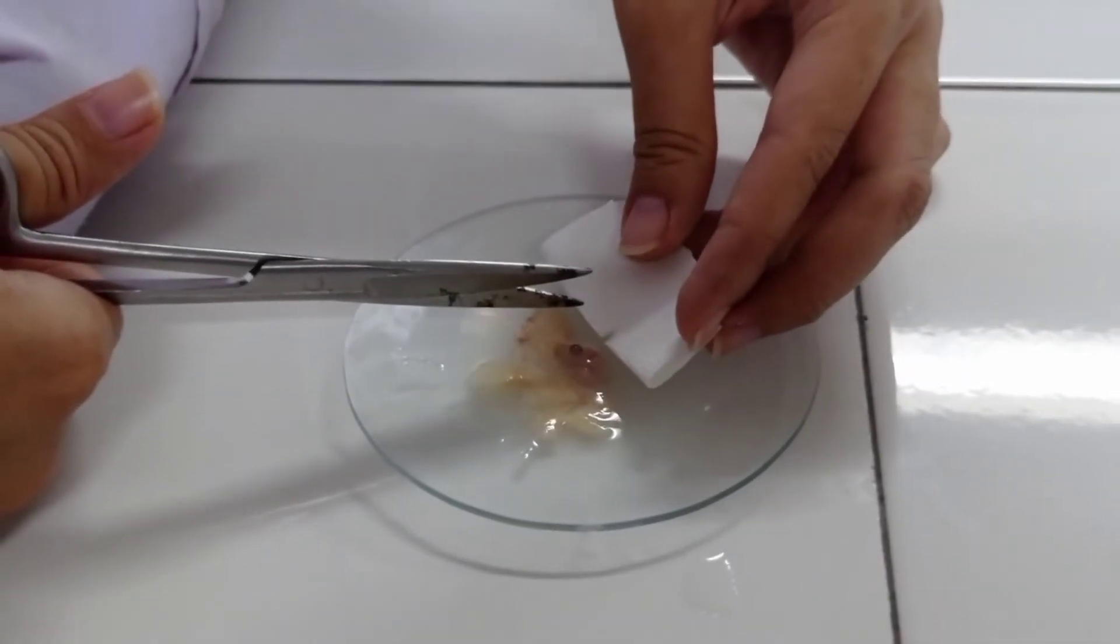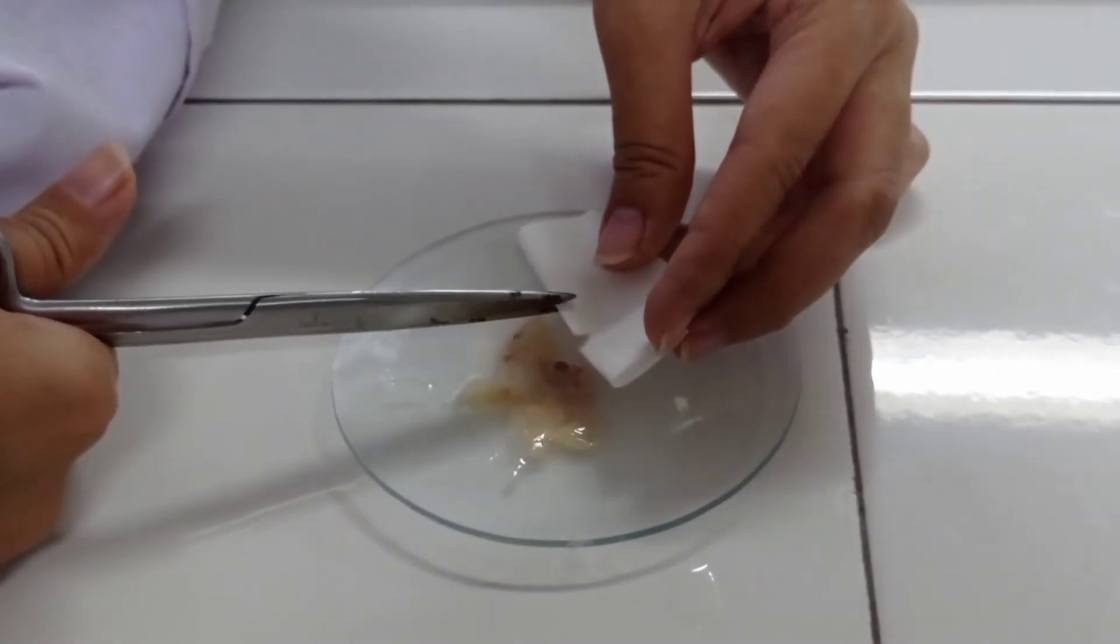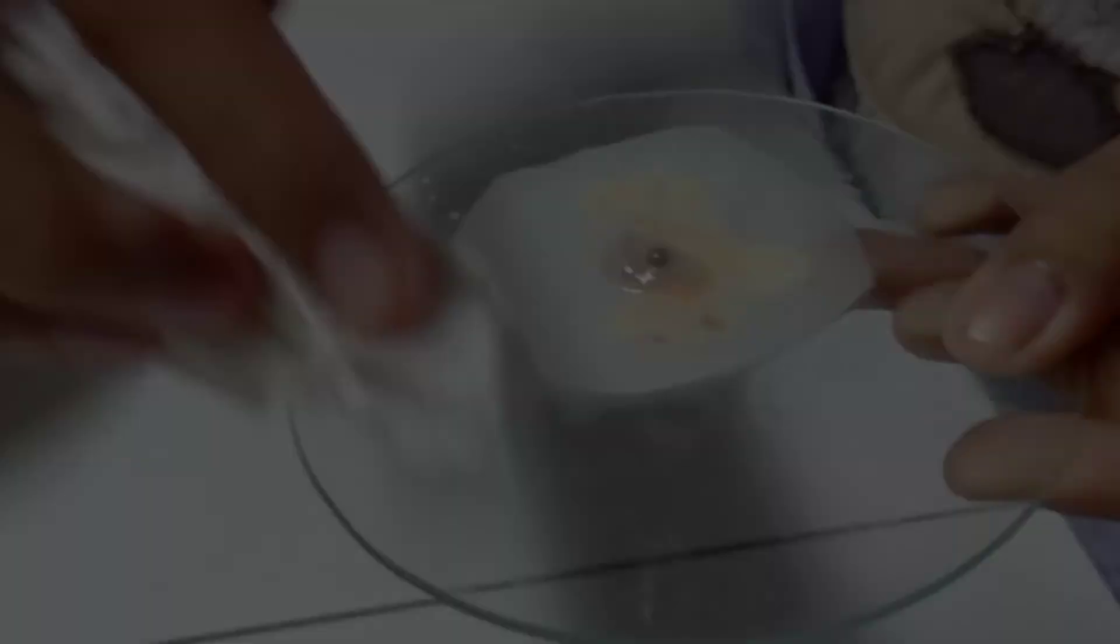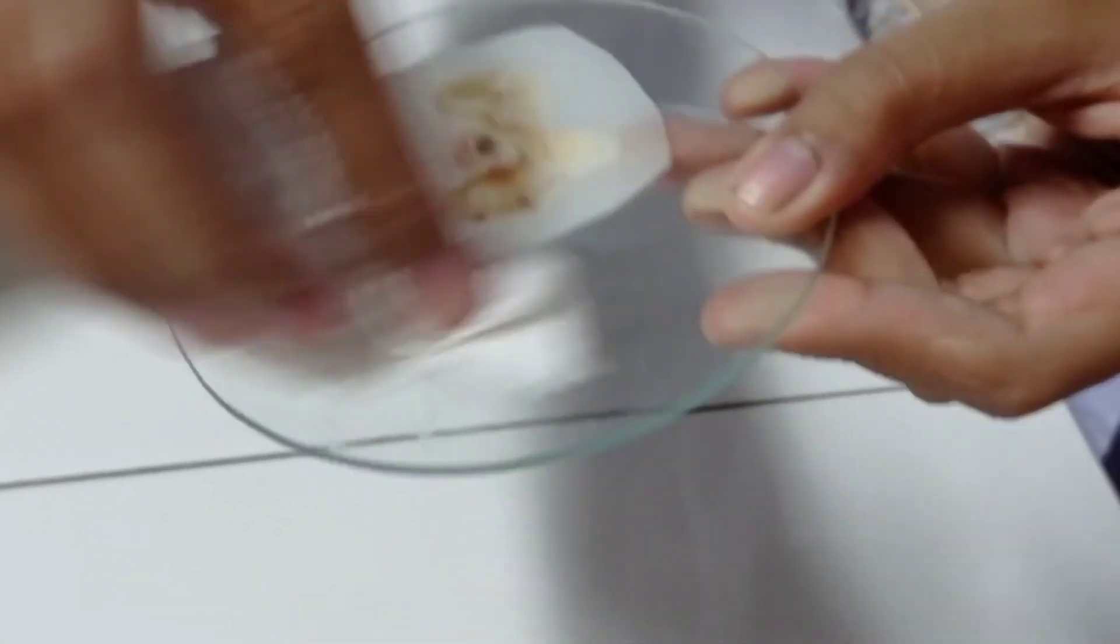Langkah ke sembilan, yaitu menyiapkan kertas saring dengan ukuran yang sesuai dengan embryo, serta dibuat membentuk seperti cincin yang mengelilingi embryo seperti pada video ini.